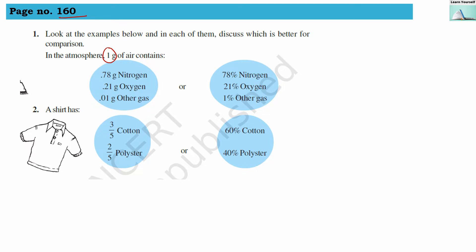and 0.01 gram other gases. This is one kind of comparison in which we are seeing the numbers in decimals. The other comparison shows the numbers in percentage. Here the quantities are clear: 78 percent is nitrogen, 21 percent is oxygen, and 1 percent other gases. In terms of percentage, the comparison